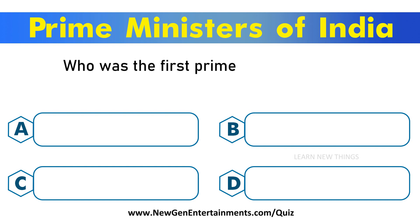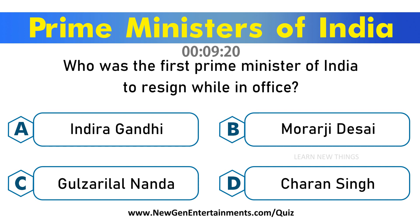Who was the first Prime Minister of India to resign while in office? Options are A. Indira Gandhi, B. Morarji Desai, C. Gulzarilal Nanda, D. Charan Singh. Answer is Option B. Morarji Desai.